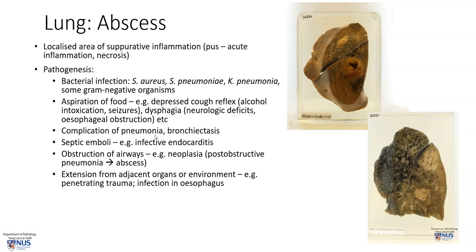Abscess can also complicate pneumonia and other infectious conditions such as bronchiectasis. If there are conditions where there are foci of infection elsewhere, for example in infective endocarditis or bacterial endocarditis, the heart valves have vegetations containing fibrin as well as bacterial organisms. These can embolize into the lung, giving rise to localized foci of infection and therefore suppurative inflammation.